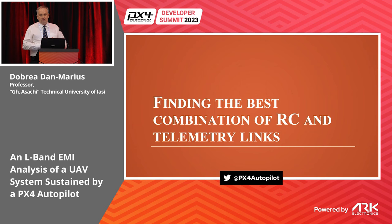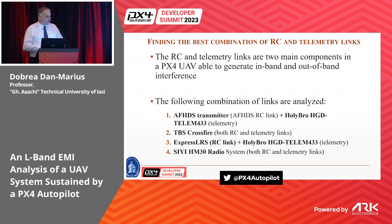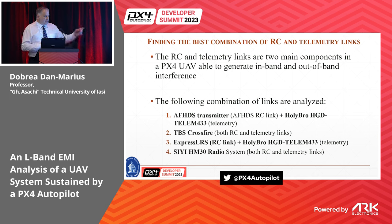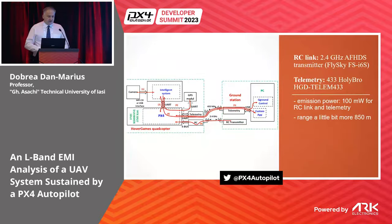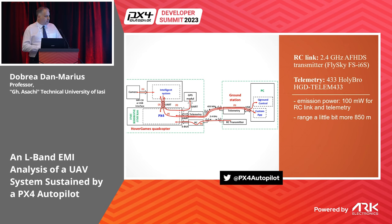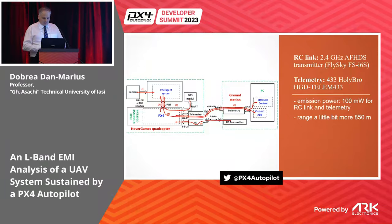The first analysis was done on the RC channel and telemetry links, mainly because both are able to generate in-band and out-of-band interference. I analyzed four types of links. The first one is the one with which the Hover Game drone is delivered. The other three are long-range links. For the first link, the RC receiver sends data via SBUS to the PX4 flight management unit running PX4 autopilot, and the telemetry link is used to make a MAVLink connection between the ground station and the drone.